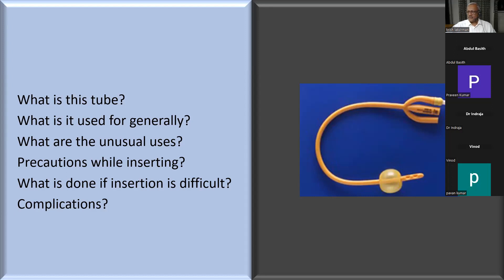If you decompress a grossly distended bladder suddenly, they get hematuria. Why? Sudden decompression leads to hyperemia of the bladder mucosa, and that can cause hematuria. These are the complications that may occur.